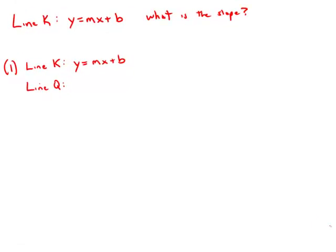If line k in the xy-plane has the equation y equals mx plus b, where m and b are constants, what is the slope of line k? Of course this slope would be m. m represents the slope, so we need to find the value of m.